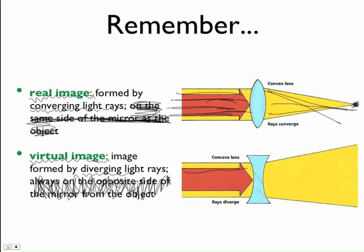So here we have all of our light rays. They're going through, and then they're diverging. A virtual image diverging, real image converging.